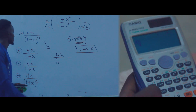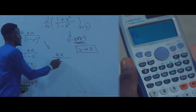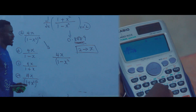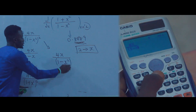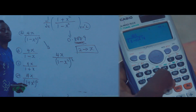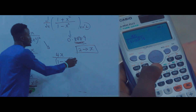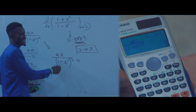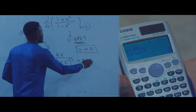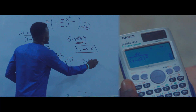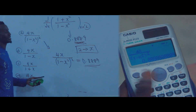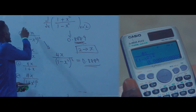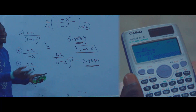For the denominator of option A: press open brackets, press 1, press minus, press alpha X, press square, close brackets, and square it. Then press equals. The final answer is 0.8889 — the same result!